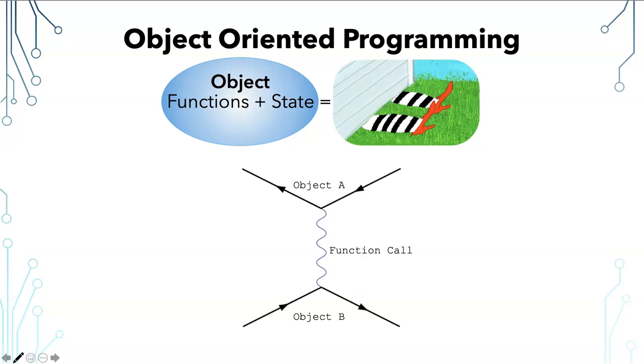This was the insight of OOP. If a program could be made up of objects, then the state could be hidden from the rest of the program. So objects interact with each other by calling functions, but reasoning about the state can safely be done inside the object. This is referred to as encapsulation.